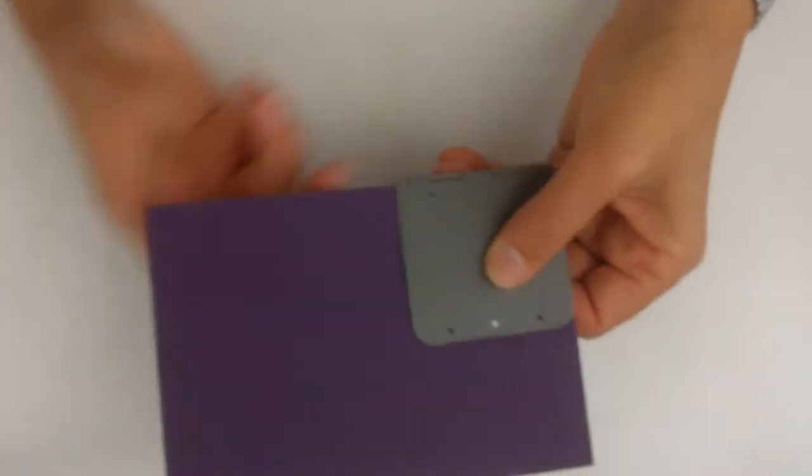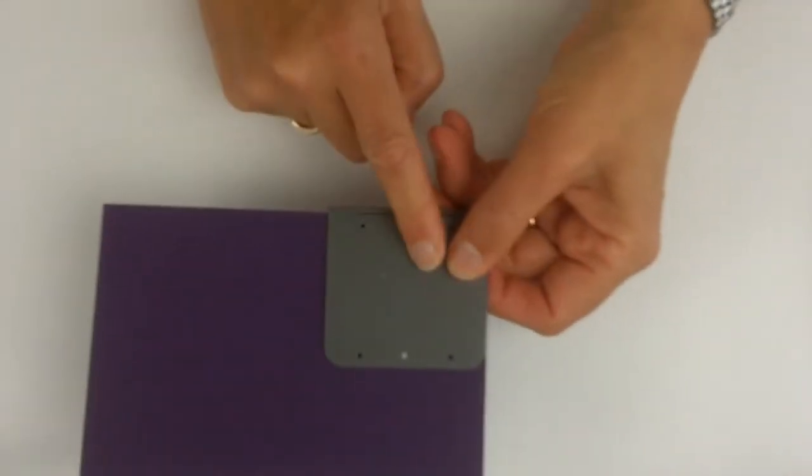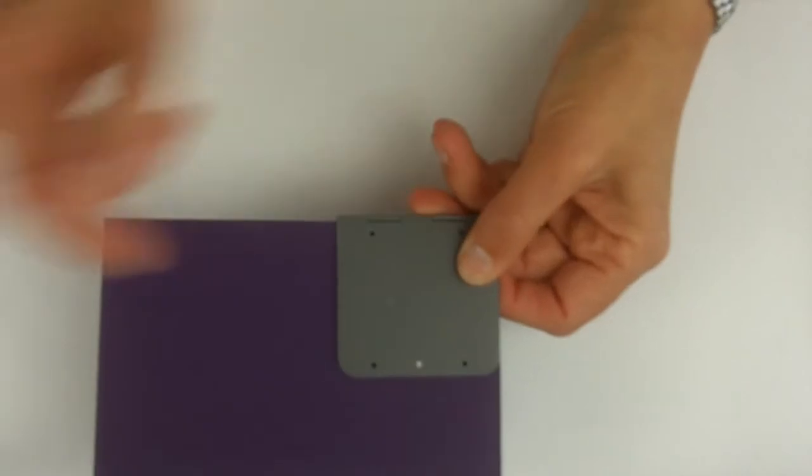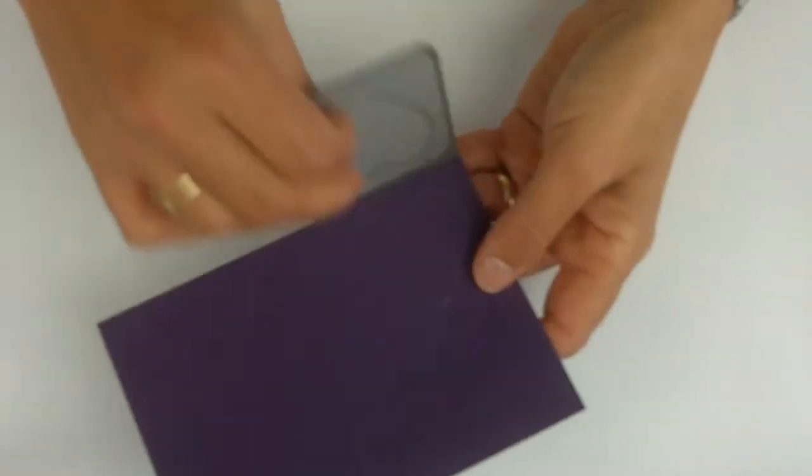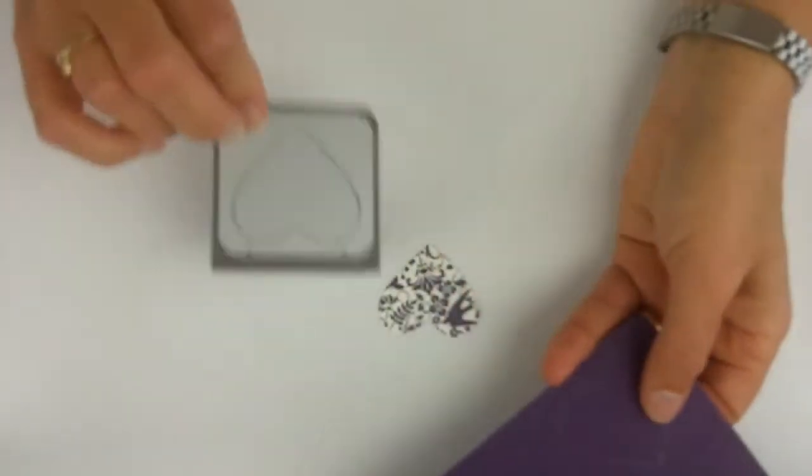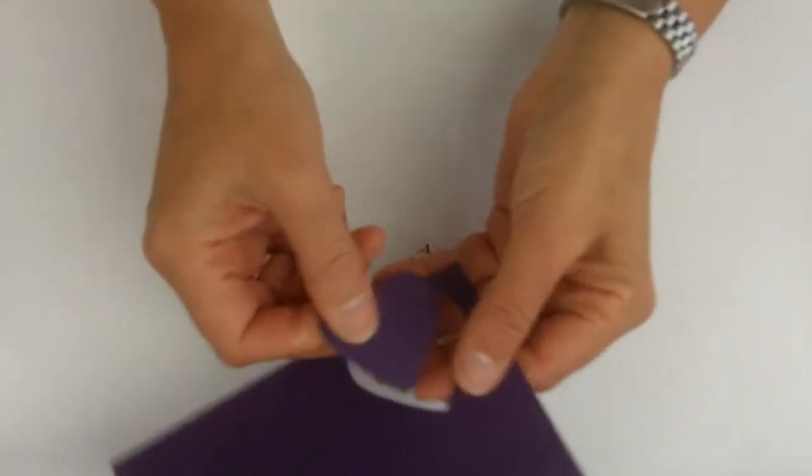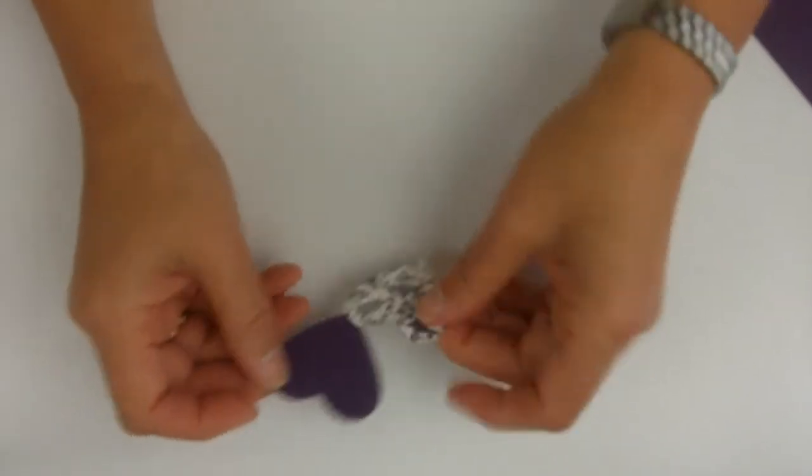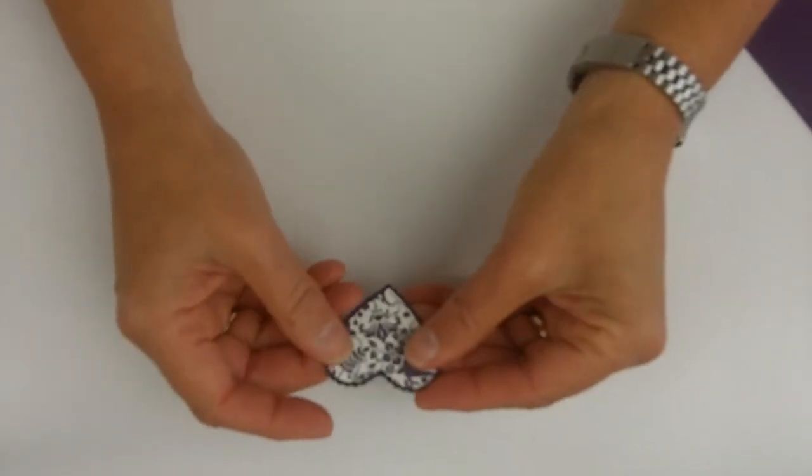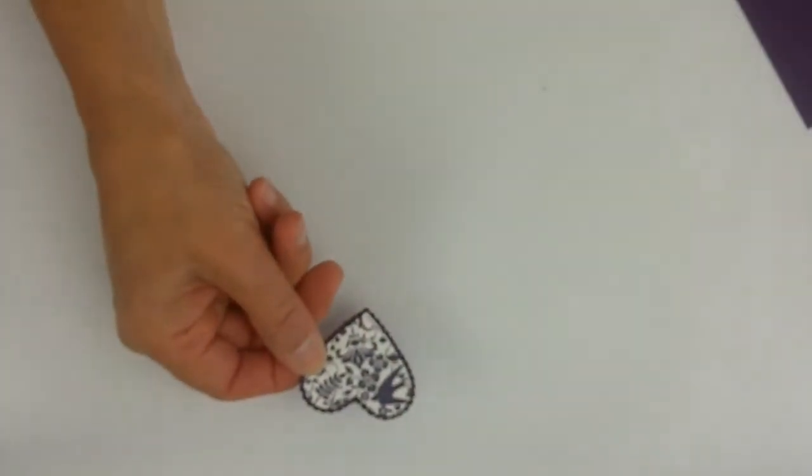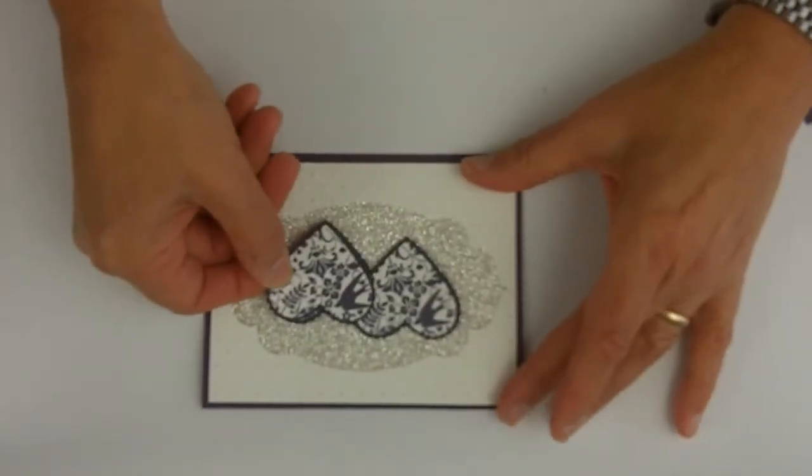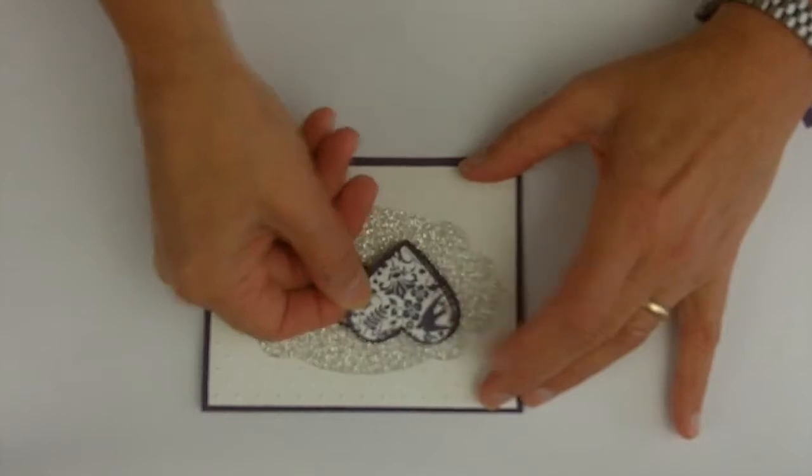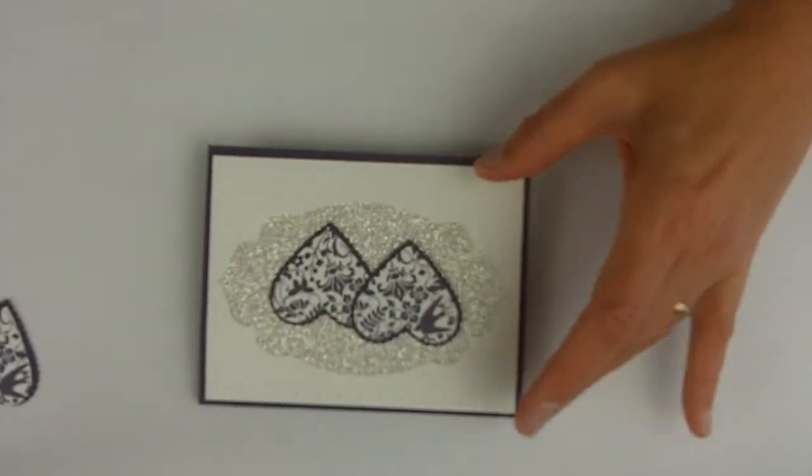So you put it right through the Big Shot like this, and then when it comes out, it looks like that. Set that aside and we just pop the heart out. Isn't that a fun look? And this is going to be just a little bit bigger so it layers right like that. So you can see I put one directly on the silver glimmer and then one I popped up with dimensionals. So that's the front of the card.